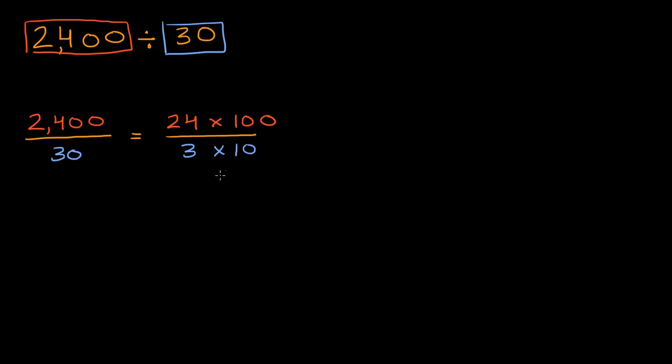Now what's valuable about thinking of it this way is you can separately divide the 24 by the 3 and then the 100 by the 10. So we have 24 divided by 3 times 100 divided by 10. Now 24 divided by 3, that is going to be 8. And what's 100 divided by 10? Well that's just going to be 10.